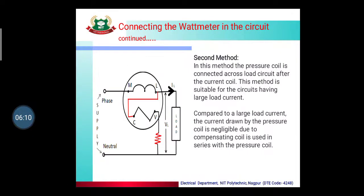In the second method, the pressure coil is connected after the current coil, directly across the load. This method is suitable for circuits having large load current. The current drawn by the pressure coil is negligible, and a compensating coil is used in series with the pressure coil to reduce error.